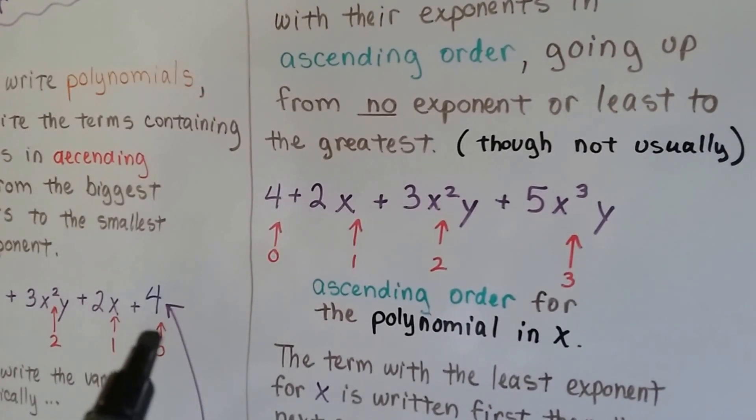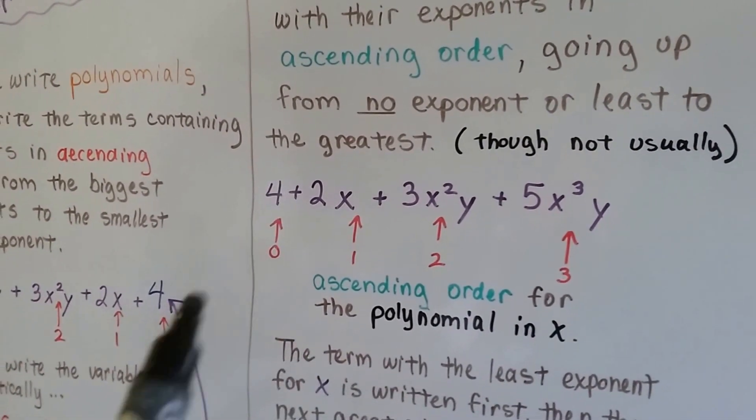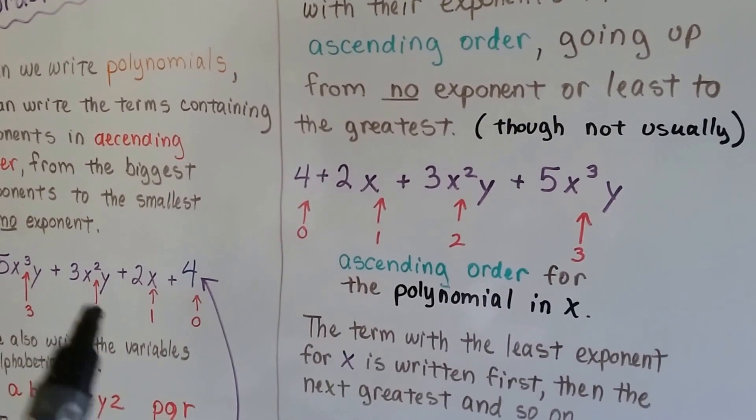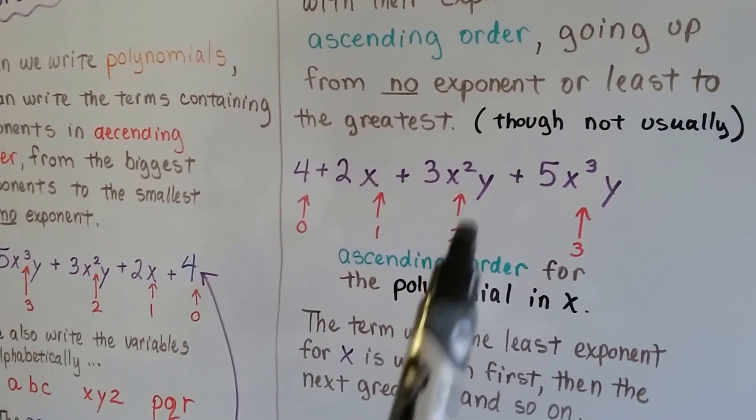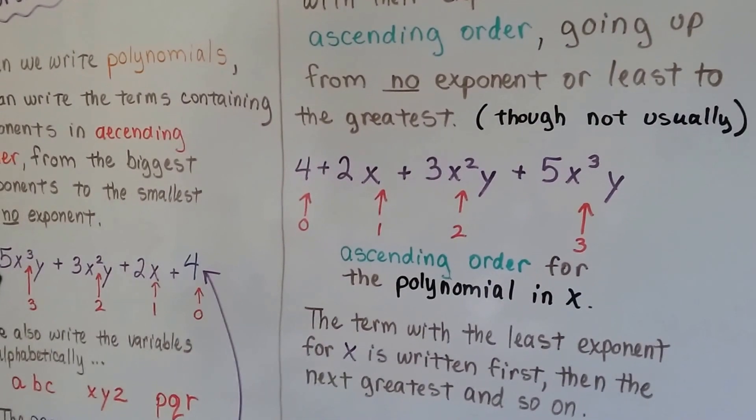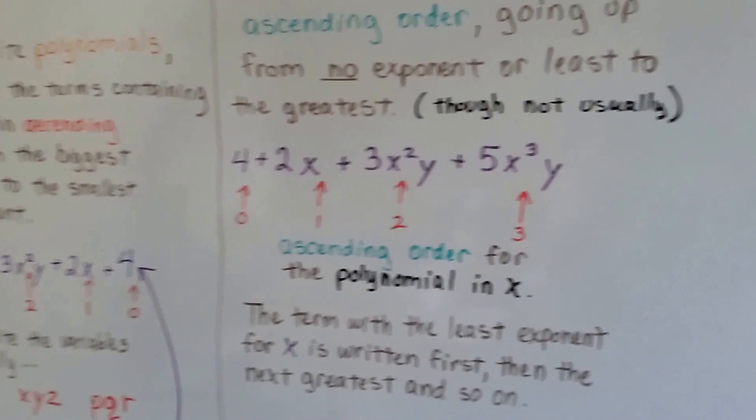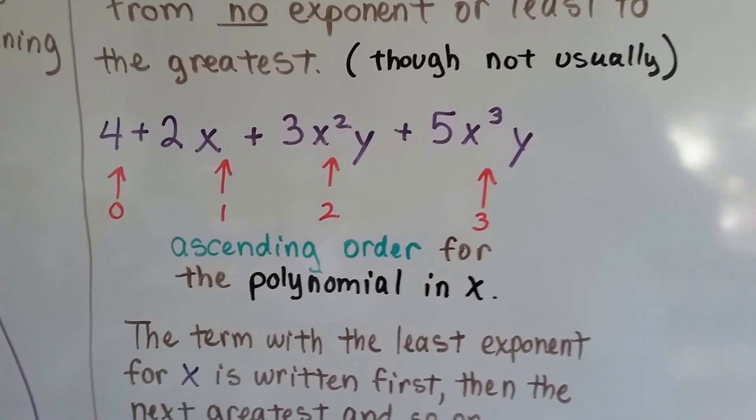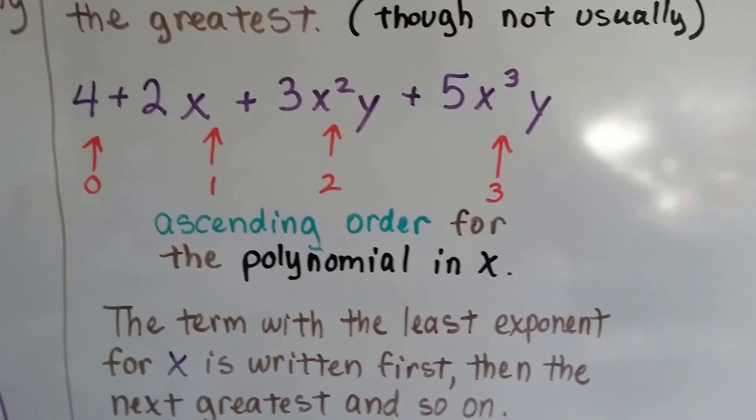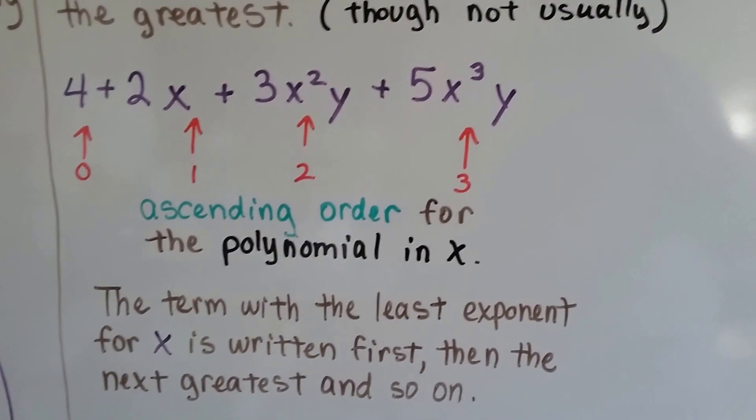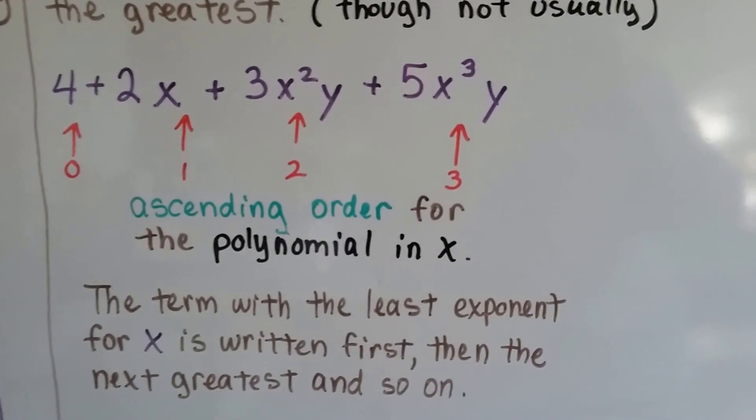So you can see it looks like it's backwards. The 4 back here is now in the front. The 2x is now here. The 3x squared y is now the next one. And then this 5x to the 3rd power y is now at the end. So it's in ascending order for the polynomial in x. The term with the least exponent for x is written first, then the next greatest, and so on.